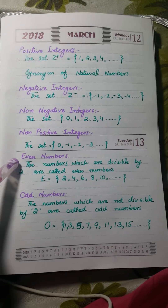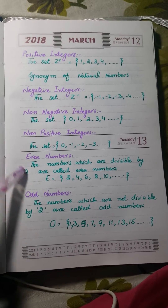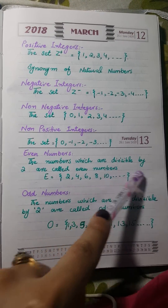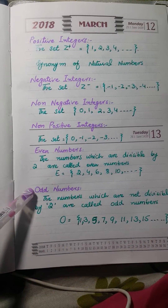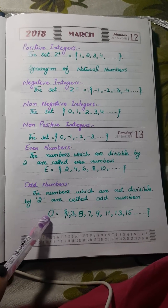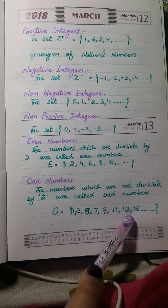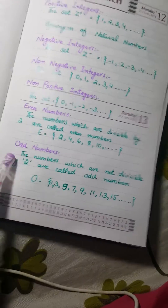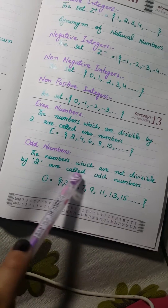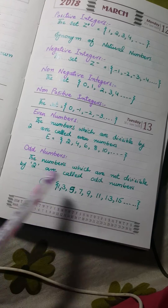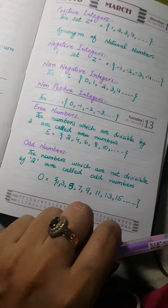Next comes the very important topic of even numbers. Even numbers are those numbers which are divisible by 2, like 2, 4, 6, 8, 10, 12 and onward — they are also called multiples of 2. Next come odd numbers. Odd numbers are those numbers which are not divisible by 2: 1, 3, 5, 7, 9, 11, 13, 15. Just to make it clear — odd numbers are not prime numbers. I will discuss prime numbers next, but remember odd numbers and prime numbers are two different things; never confuse them.